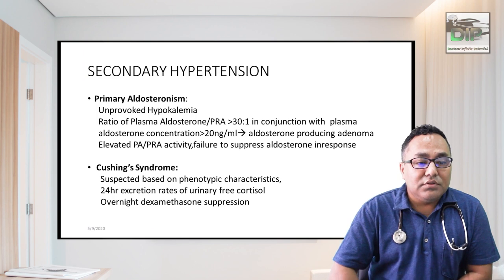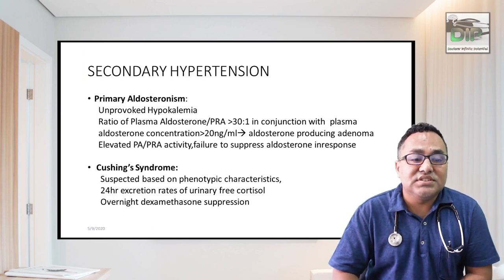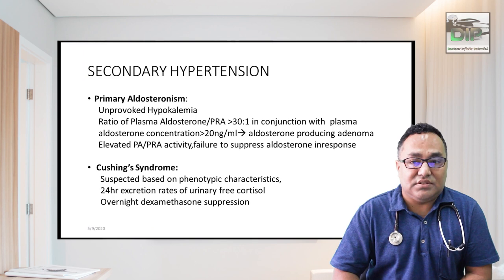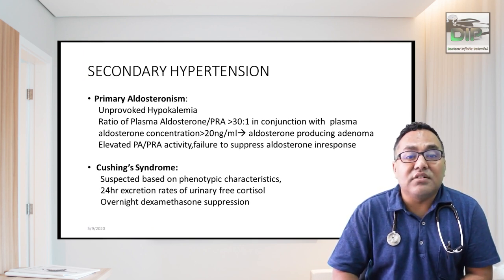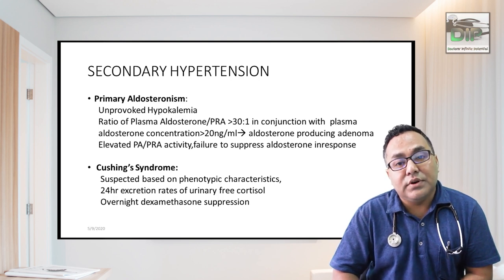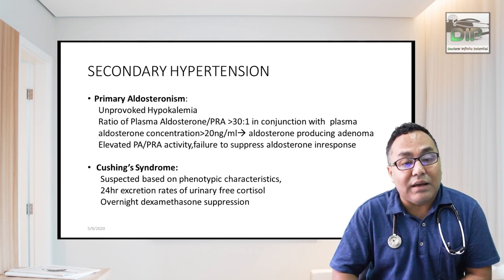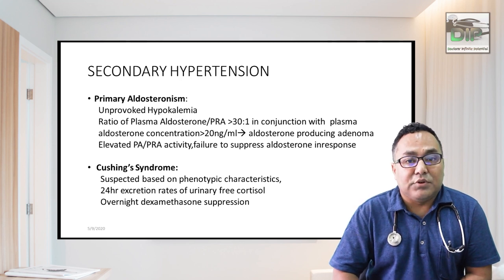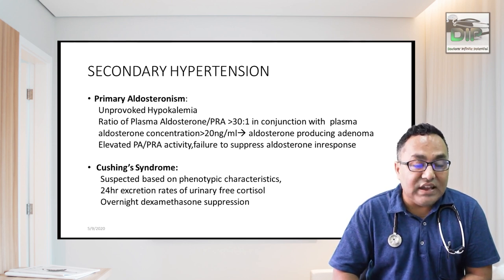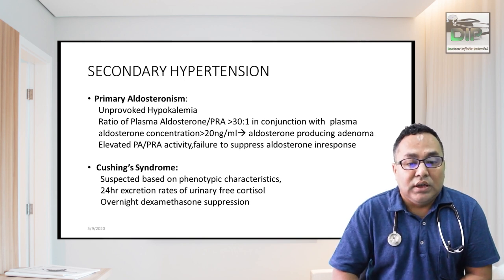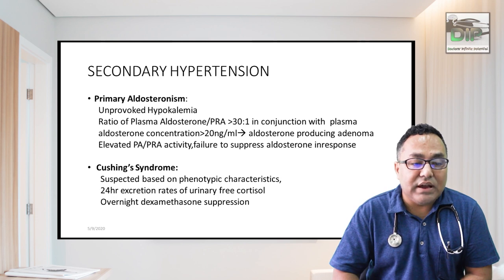Cognitive function tests and brain imaging can also be done to rule out other target organ damage associated with hypertension. For primary aldosteronism: if a hypertension patient without diabetes presents with recurrent hypokalemia, suspect primary aldosteronism. Send plasma aldosterone-to-renin activity ratio; if it is more than 30:1, suspect primary aldosteronism.